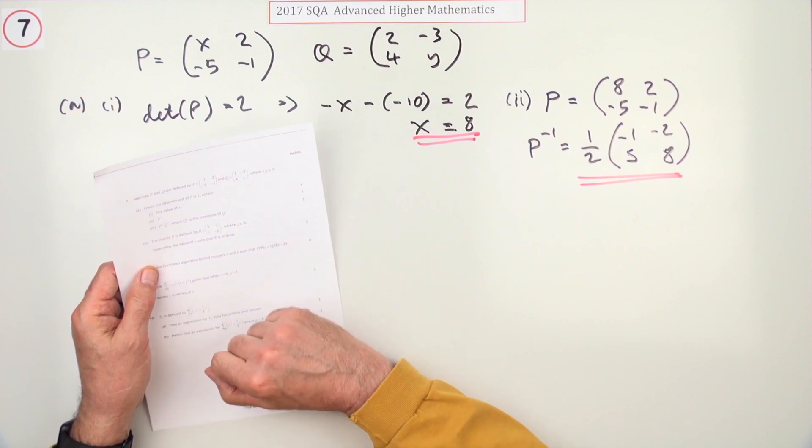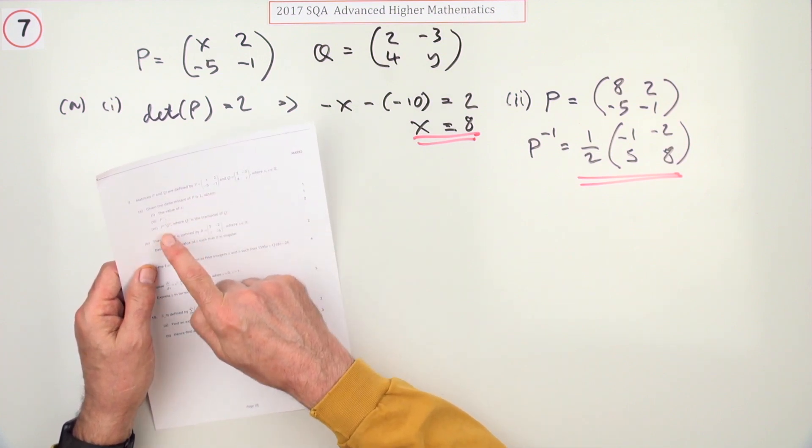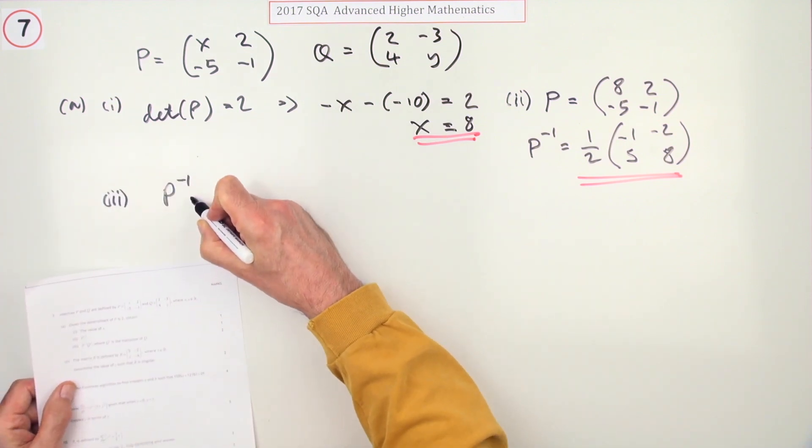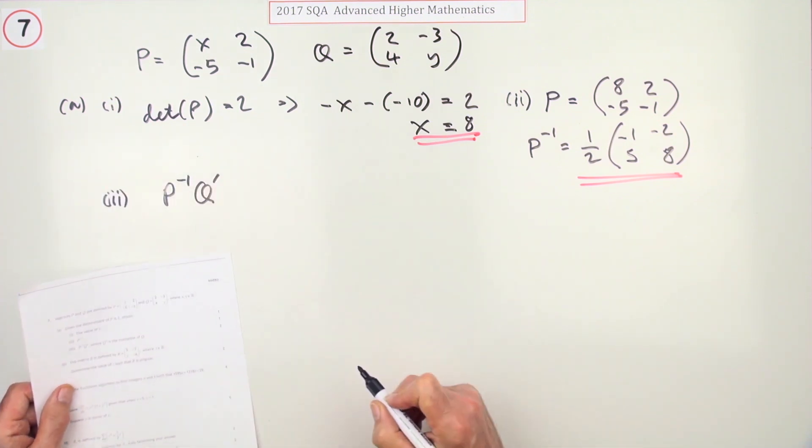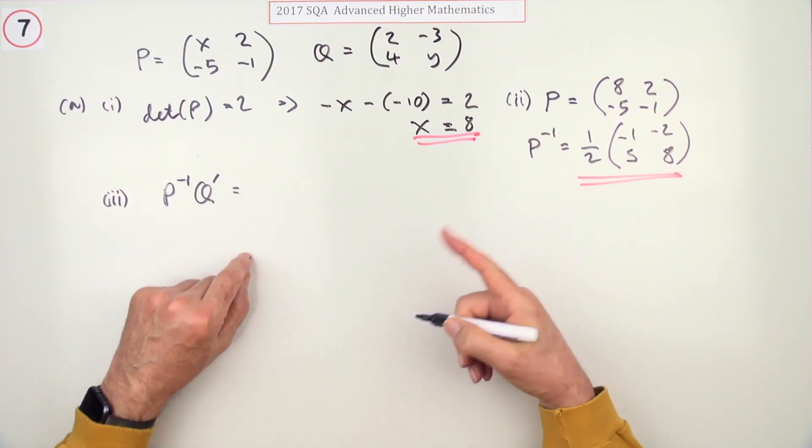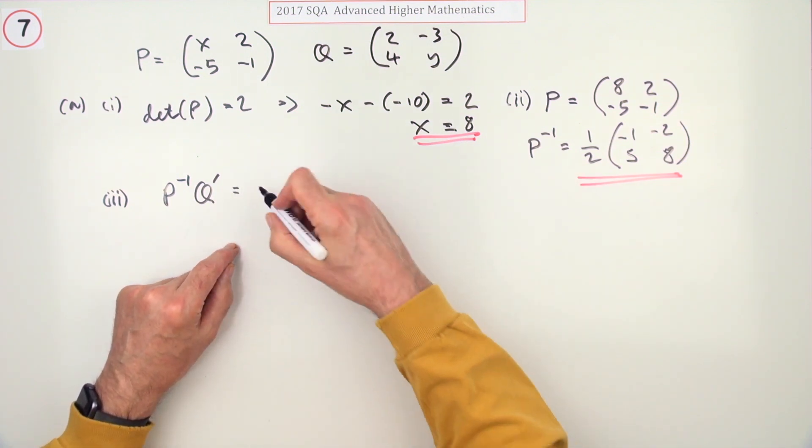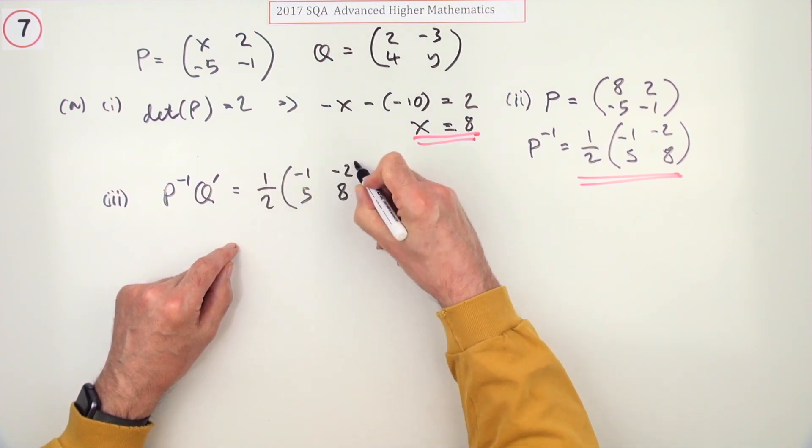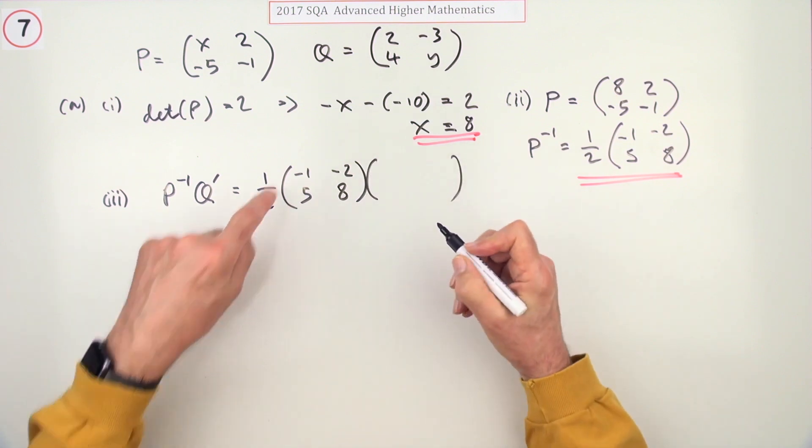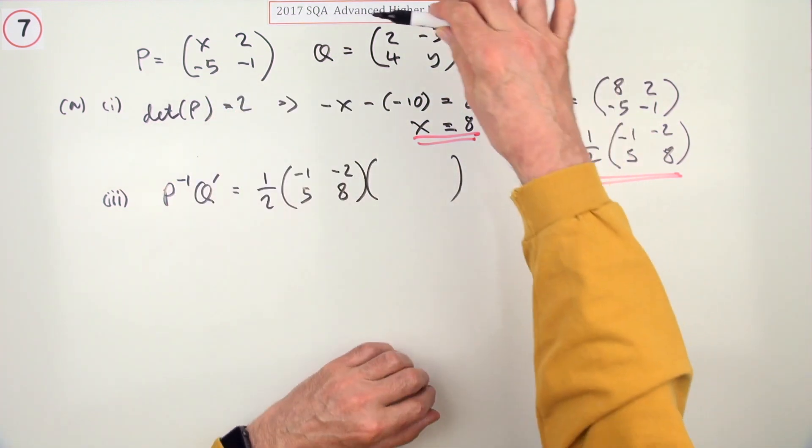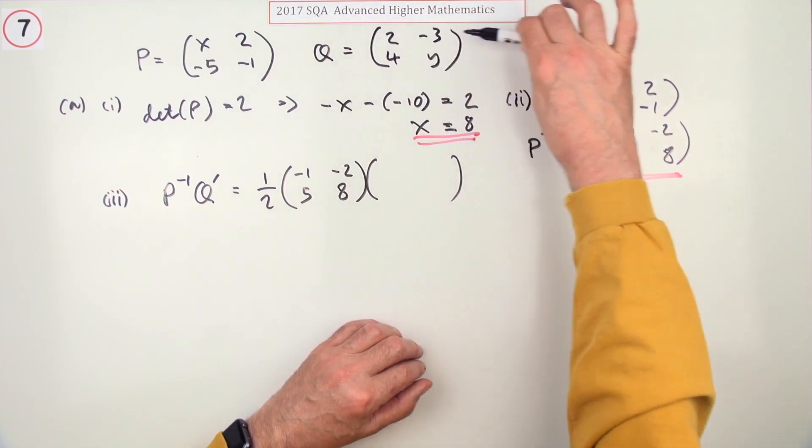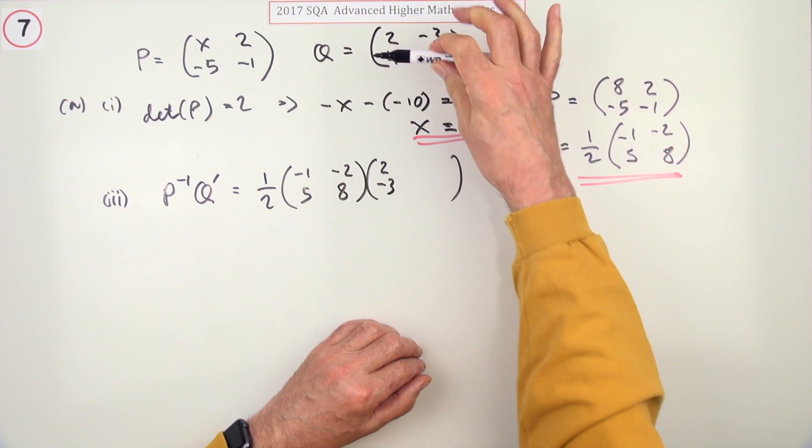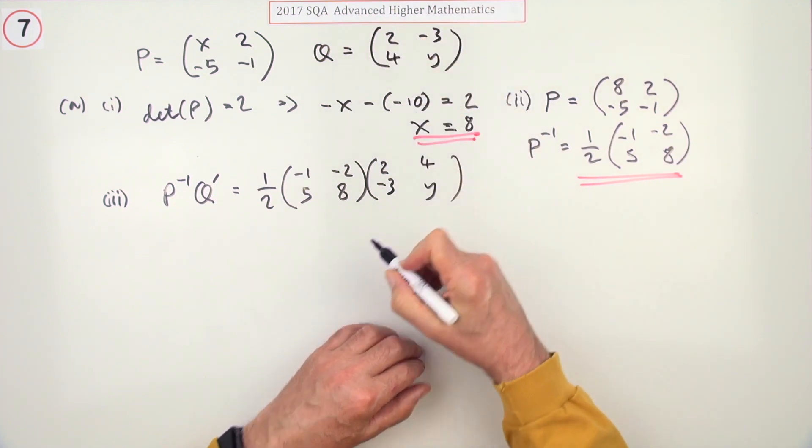The third part: obtain the inverse of P times the transpose of Q. The inverse of P was a half of (-1, -2; 5, 8). The transpose of Q simply means changing the rows into columns. The first row (2, -3) becomes the first column, the second row (4, y) becomes the second column.